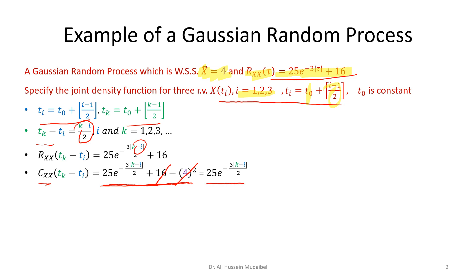Remember that k and i can be 1, 2, 3. We can substitute the values and we get different instances of time. If i equals k, this is going to be 25. If k or i is different by one point, I get 25e^(-3/2). Or I get 25e^(-3), if the difference is just 2 units.